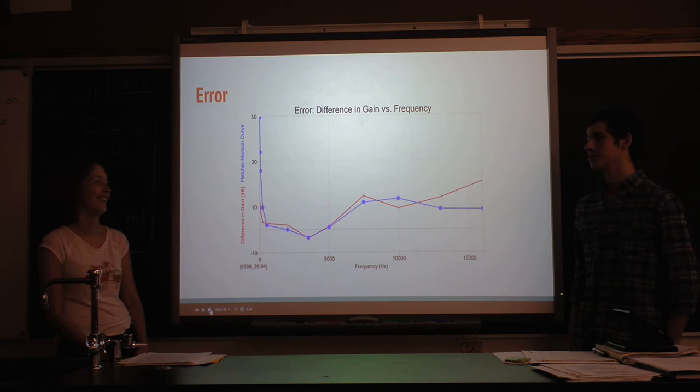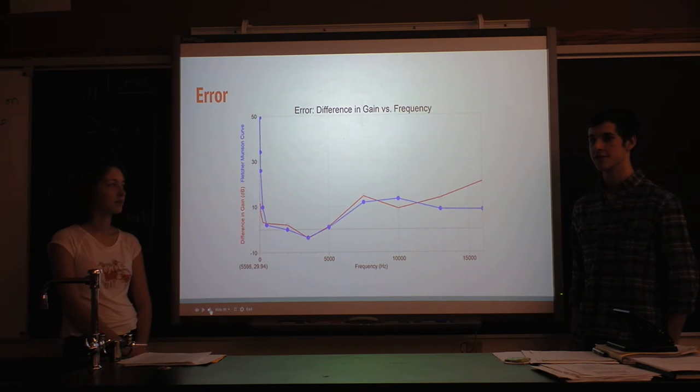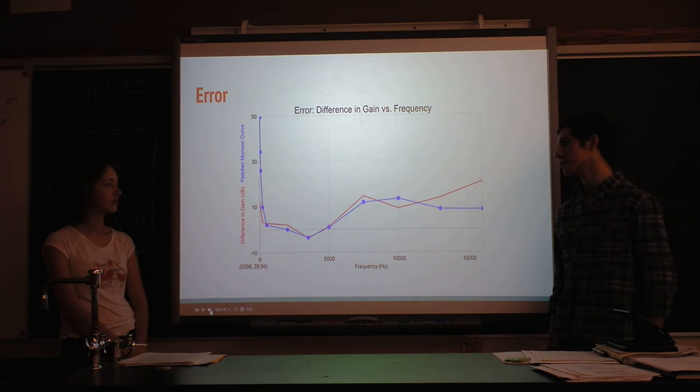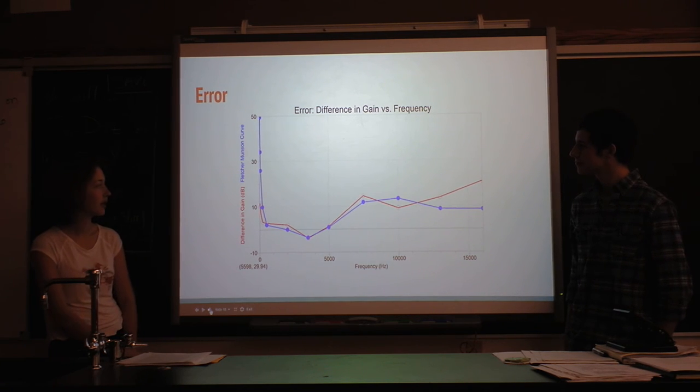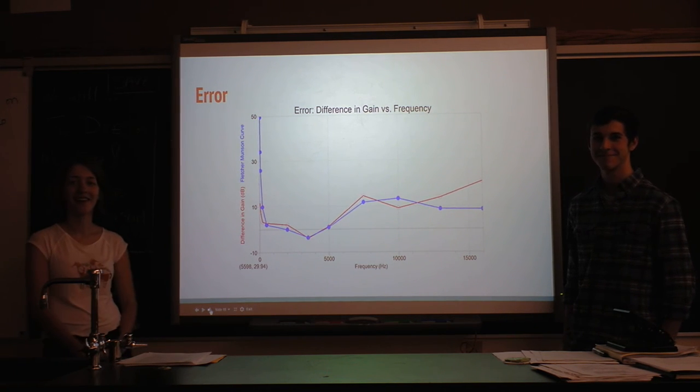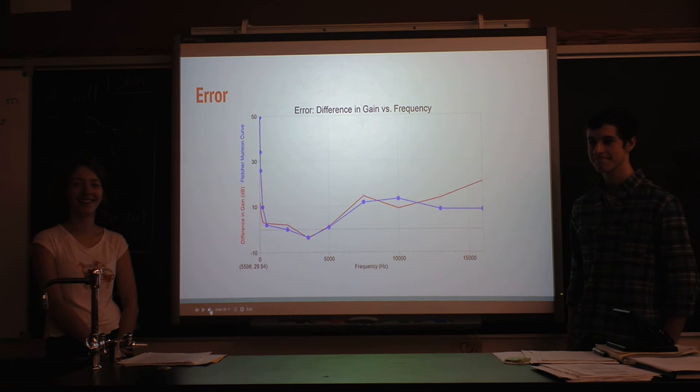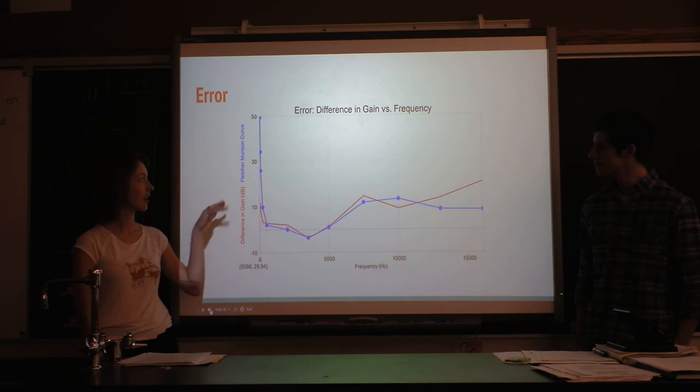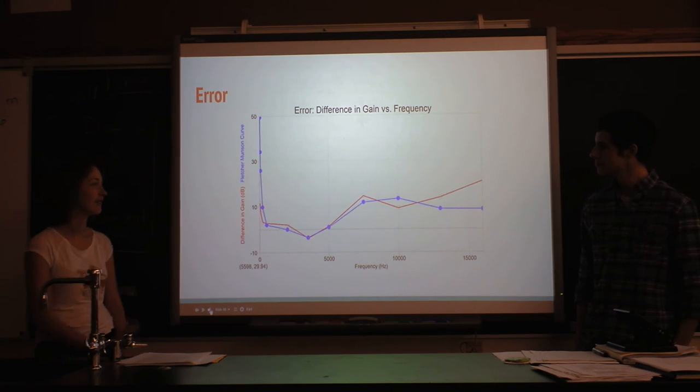Back to it. The blue is the actual professionally done, established data. The red is the averages of our test subjects. It's pretty close in some of them. But as you can see, towards the lower and higher ranges, it got a little messed up. But that's okay.